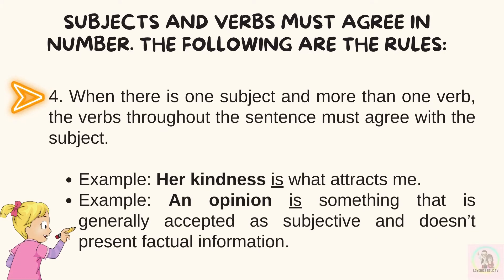Number four, when there is one subject with more than one verb, the verbs throughout the sentence must agree with the subject. Example: her kindness is what attracts me. Another example: an opinion is something that is generally accepted as subject and doesn't present factual information.